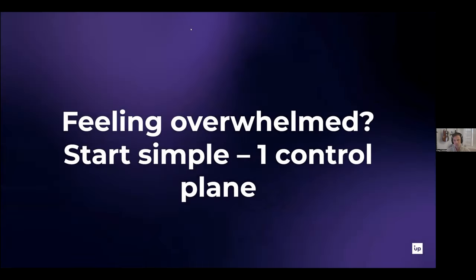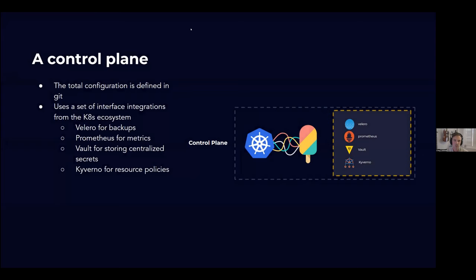If you're feeling a little overwhelmed, start simple — start very simple. The questions I'm raising are things you start to think about as you get past the initial POC phase and start building a roadmap for what it means to take Crossplane into production. If you're not there yet, start with just a single control plane abiding by the baseline architecture I was describing.